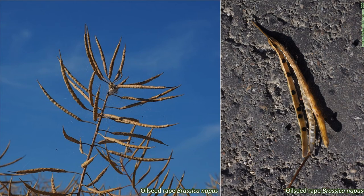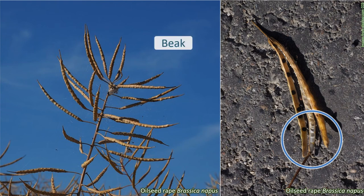The ovary ripens to a fruit that resembles a capsule with two sections, one on each side of a membrane. These fruits split along two valves away from the membrane, releasing the seeds. The fruits of some species have what's called a beak on the end. The shape and size of the fruits, and whether or not they have a beak, are important ID features for individual species.